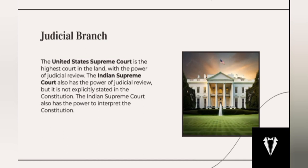Next is the judicial branch. The United States Supreme Court is the highest court in the land with the power of judicial review. The Indian Supreme Court also has the power of judicial review, though it is not explicitly stated in the constitution, and it also has the power to interpret the constitution. The US Supreme Court is the final arbiter of the constitution and can strike down laws passed by Congress or the states if they violate the constitution. The Indian Supreme Court can also strike down laws, but only those that violate the constitution or the fundamental rights guaranteed by it, as the court derives its powers from the constitution itself.